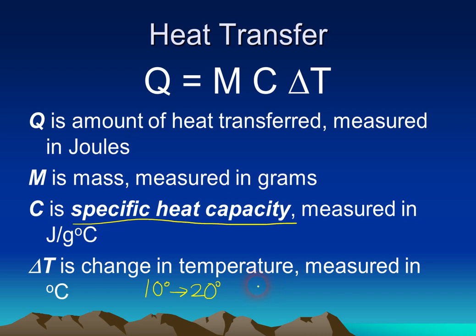What's the delta T if we go from 15 degrees Celsius to 35 degrees Celsius? Hopefully you see that that's a change of 20. What about if we go from 70 degrees Celsius to 60 degrees? Do you see that it's negative 10? Since the temperature is going down, it is a negative delta T.